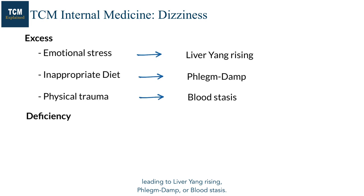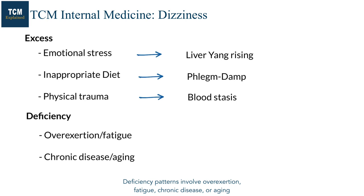Deficiency patterns involve overexertion, fatigue, chronic disease, or aging, leading to qi blood deficiency or kidney essence deficiency.